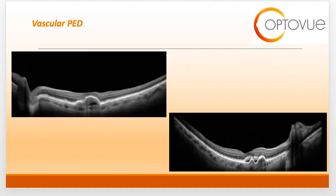This is another scan of vascular PEDs. Note the heterogeneous nature of the internal components. You can see a turbid color and a clear hyporeflective color, indicating that there is a serous component and a bloody component to the PED.